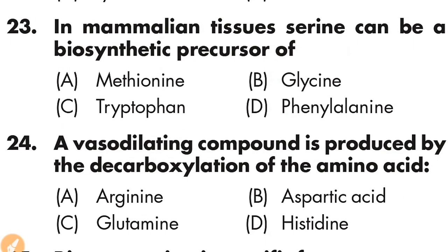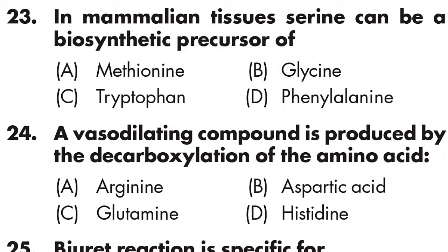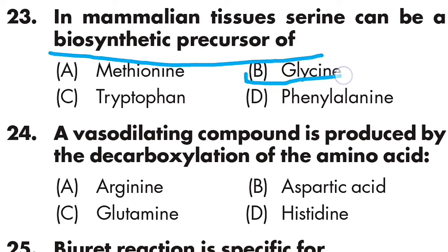Question number twenty-three: in mammalian tissue, serine can be a biosynthetic precursor of — Option A is methionine, Option B is glycine, Option C is tryptophan, Option D is phenylalanine. The correct answer is Option B — glycine, as serine is a biosynthetic precursor of glycine.